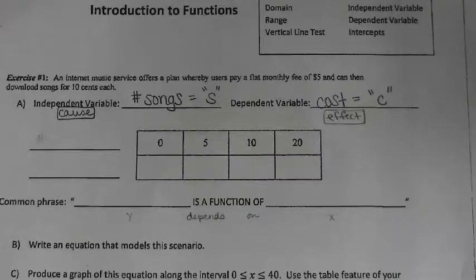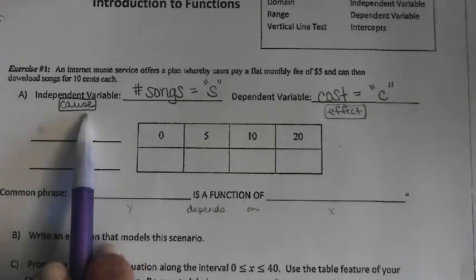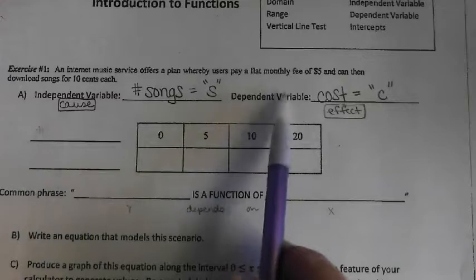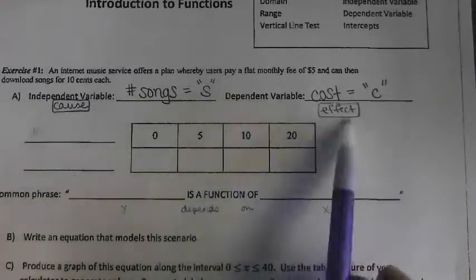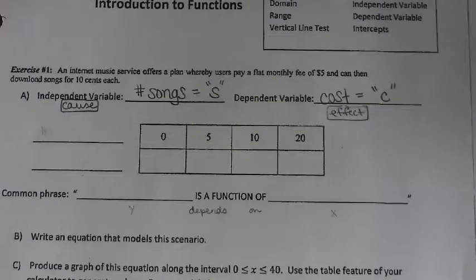Okay, great. So, the two variables changing are the number of songs that you can download, and therefore, the cost that each of you pays is different. The independent variable always associates with a cause, and the dependent, because it depends on this, is always the effect.